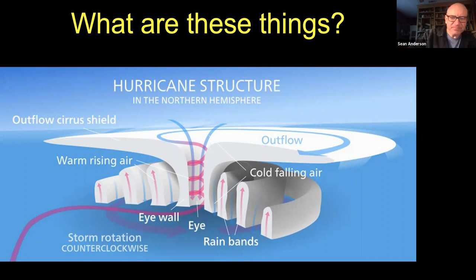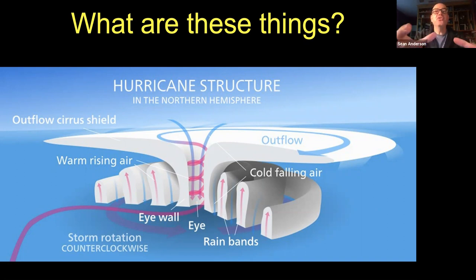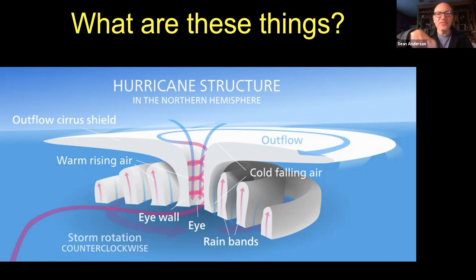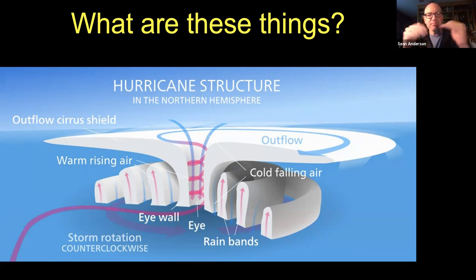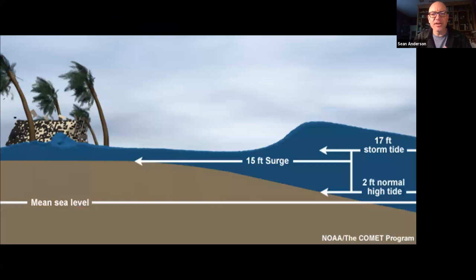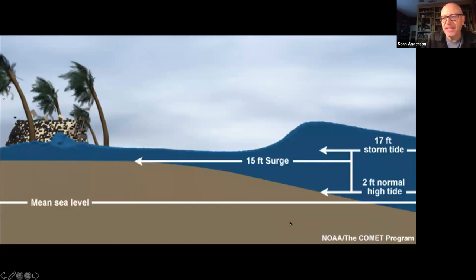This is the atmospheric part of what's going on. As the storm moves through space, the spinning of the air mass creates friction on the surface of the ocean, which tends to pile up water. That piling up of water is what we refer to as storm surge.